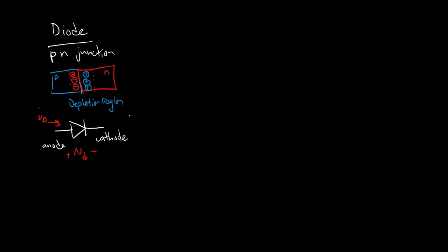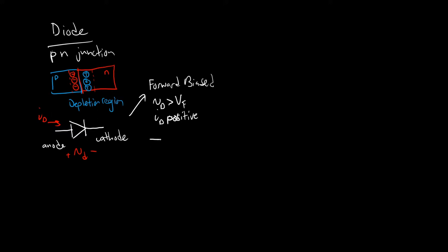There are two distinct regions we think about in switch mode power supplies. The first is the forward biased region, when VD is greater than some threshold — the forward voltage drop, VF. The voltage you apply to the diode has to be greater than VF to turn the diode on. When this happens, positive current can flow through the diode; ID is positive. On a circuit level, when the diode is forward biased, we model it as a voltage source. There's a positive voltage drop across the diode, VF, that we lose when it's turned on.